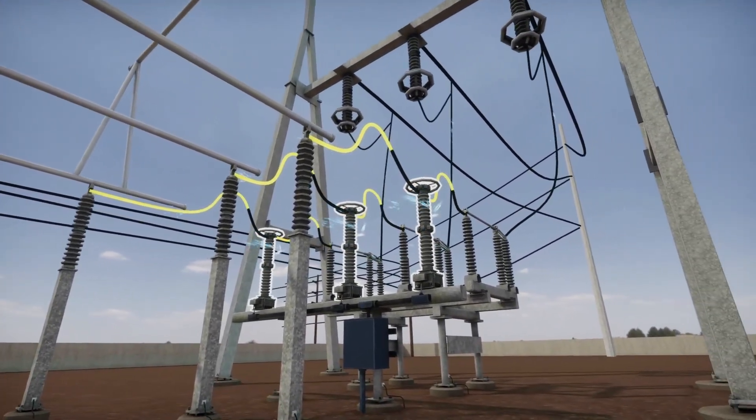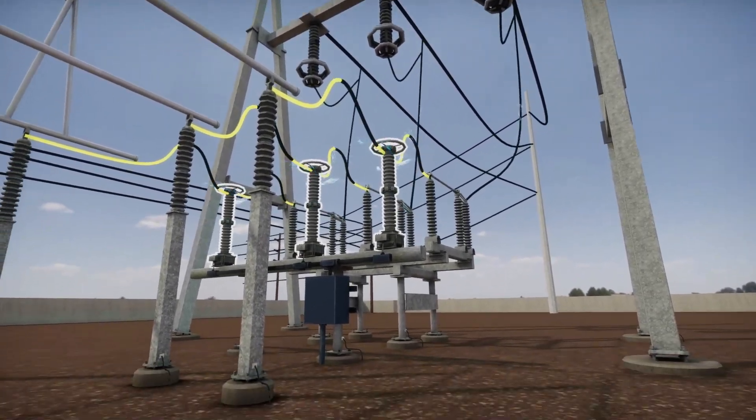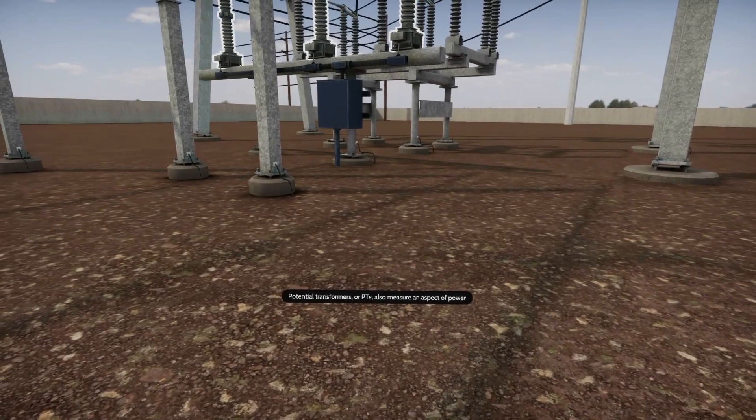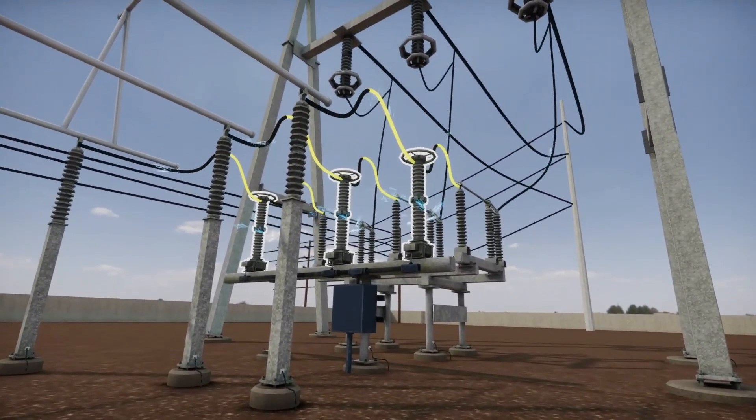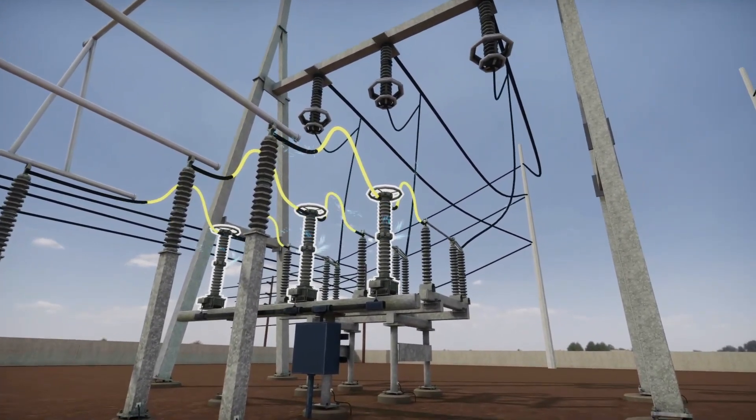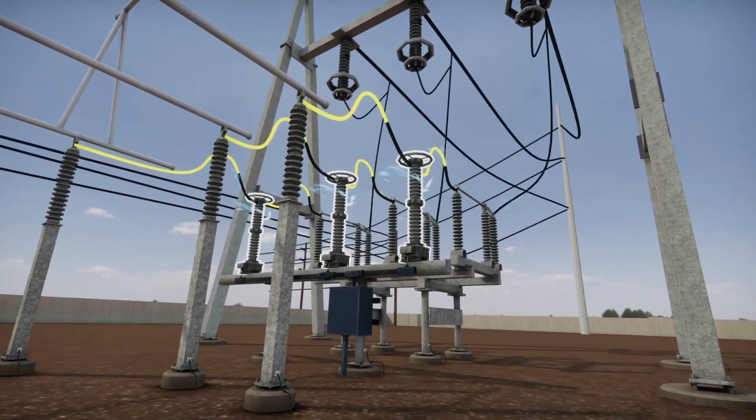Current transformers, also known as CTs, are used to measure alternating current. Potential transformers, or PTs, also measure an aspect of power supply. But while CTs measure current, PTs measure voltage. Both reduce the high voltage and current to an amount that can be recorded by instrumentation.